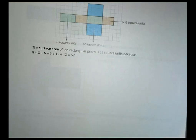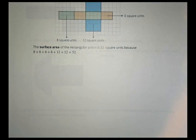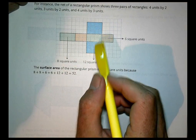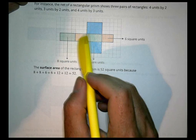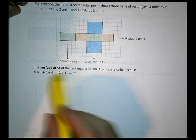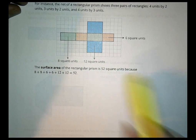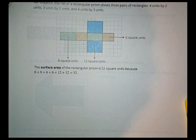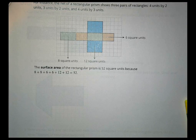For instance, the net of a rectangular prism shows three pairs of rectangles: 4 by 2, 3 by 2, and 4 by 3. By adding all those rectangles up, we can come up with a surface area of 52 square units. All right, we're going to pause there and you're going to do your homework, then we'll come back and check it together.